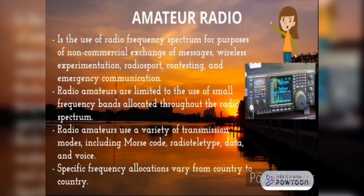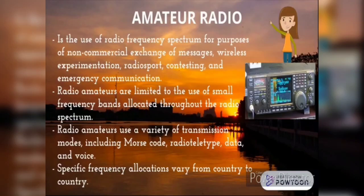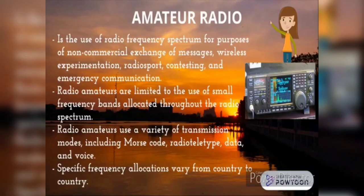Last but not least, amateur radio is also an application of FSK modulator. Amateur radio is the use of radio frequency spectrum for non-commercial exchange of messages, wireless experimentation, self-training, private recreation, radio sports, and emergency communication. Radio amateurs are limited to small frequency bands called amateur radio bands, allocated throughout the radio spectrum, but within these bands are allowed to transmit on any frequency using a variety of voice, text message, and data communication modes. Radio amateurs use transmission modes including Morse code, radio teletype, data, and voice. Specific frequency allocations vary by country and between ITU regions as specified in the ITU-HF frequency allocation for amateur radio, and the list of frequency ranges is called a band allocation.